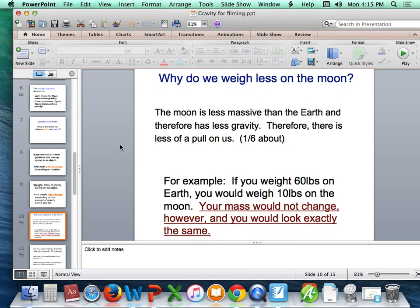This leads us to why we weigh less on the Moon. The Moon is less massive than the Earth and therefore has less gravity. As a matter of fact, the Moon is about one-sixth of the Earth's gravity. Therefore, you would weigh about one-sixth on the Moon. If you were to step on a scale on the Earth and the scale read 60 pounds, if you stepped on that same scale on the Moon, you would only weigh 10 pounds. Basically, 10 pounds is one-sixth of 60. Your mass would not change, however, and you would look exactly the same. Only your weight on the scale would be different.